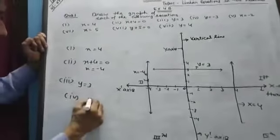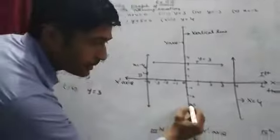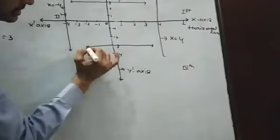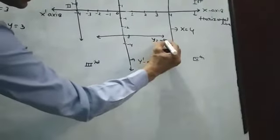Next, students, y equal to minus 3, so y minus 3 is downwards. This one is also students parallel to x-axis.